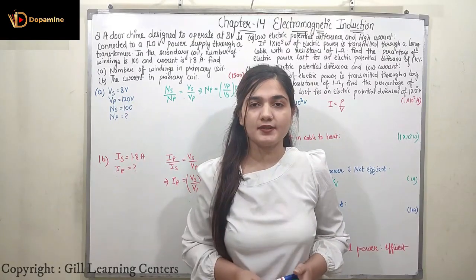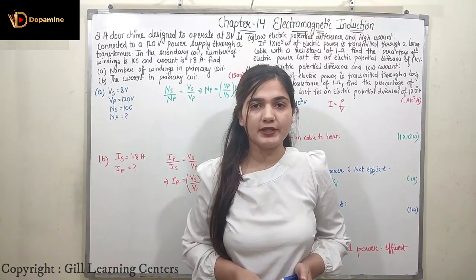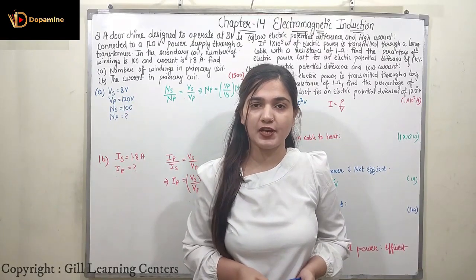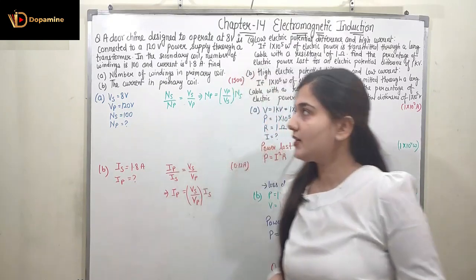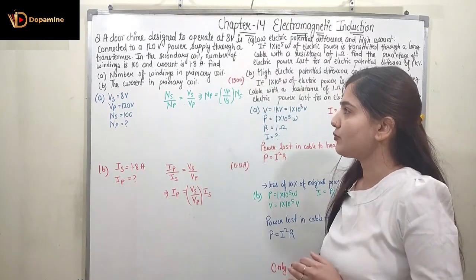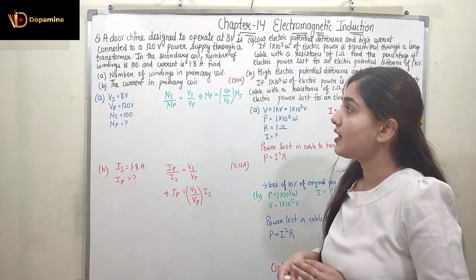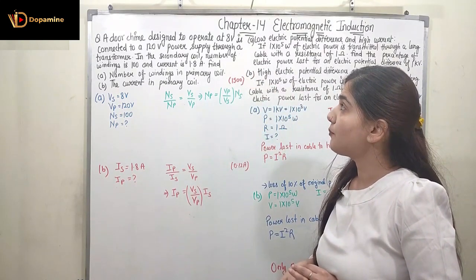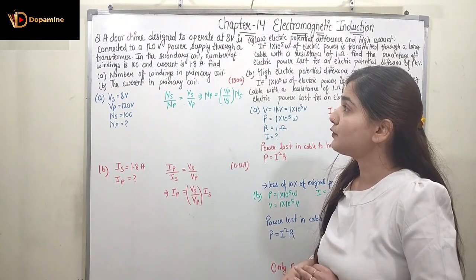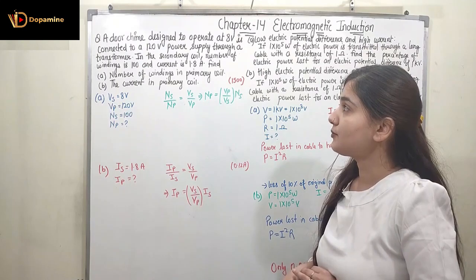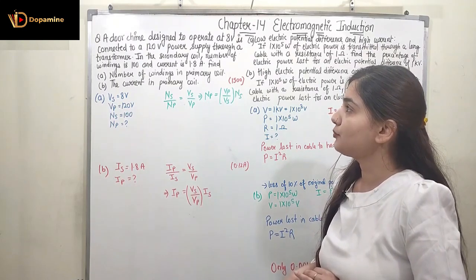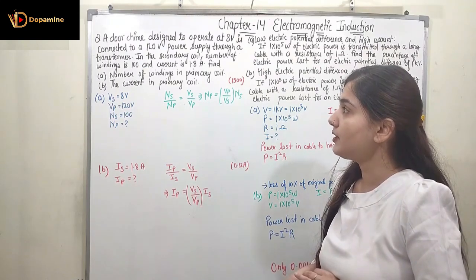Hello guys, we are discussing Chapter 14 Electromagnetic Induction. Let's start our discussion with the first problem, which states: a door chime designed to operate at 8 volts is connected to a 120 volt power supply through a transformer.